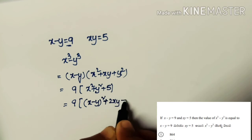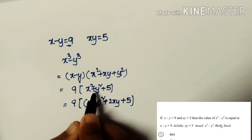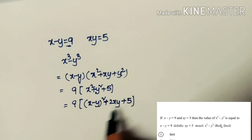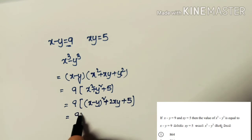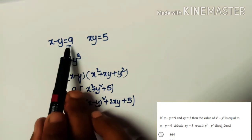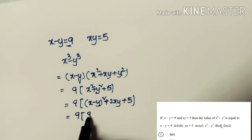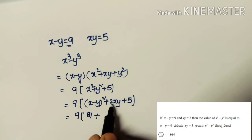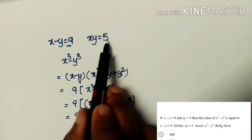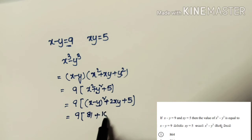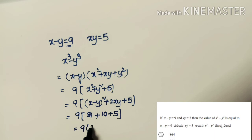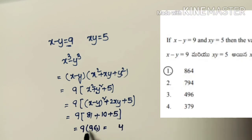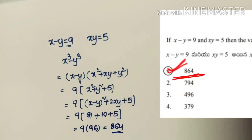Using x² + y² = (x − y)² + 2xy: (9)² + 2(5) = 81 + 10 = 91. So x³ − y³ = 9 × (91 + 5) = 9 × 96 = 864, which is the first option.